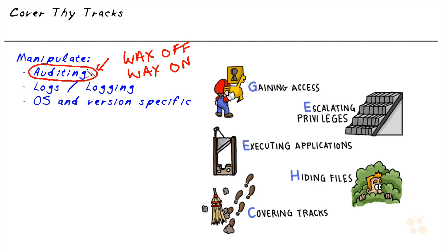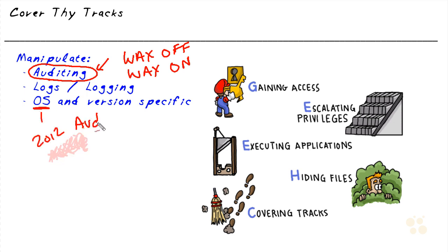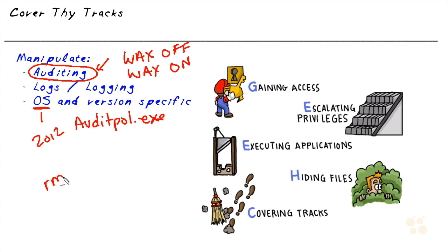The tools that the attacker is going to use may depend on the type of system being attacked. For example, with Windows 2012, there's a tool called auditpol.exe that can be used to view the current settings for auditing and also to change the settings. If we're on a Linux system, we might go in and delete log files or delete history files. On Linux, we could use the command rm for remove and add switches for force and recursive to delete certain files.